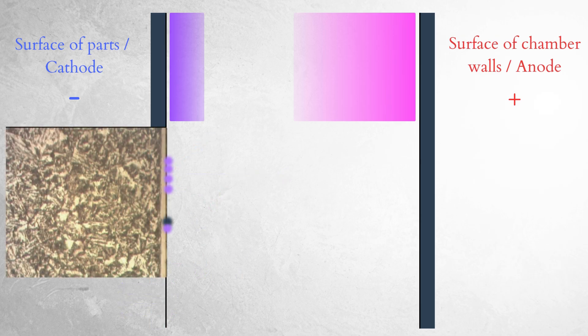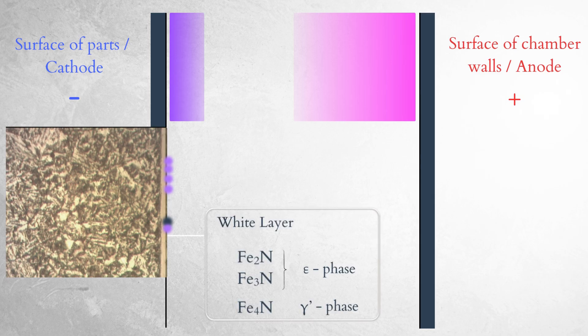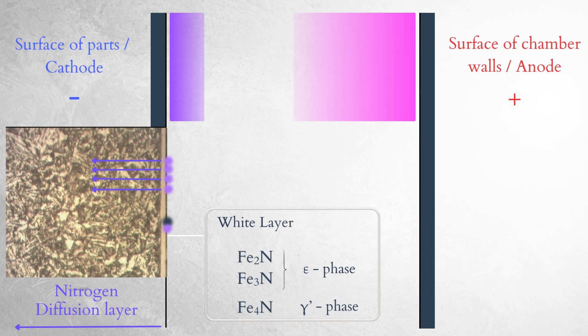Nitrogen forms nitrides with iron on the surface of the material, creating the white layer on top. And also diffuses deeper into the steel to form nitrides with iron, chromium, molybdenum, and other alloy elements, creating the nitrogen diffusion layer.